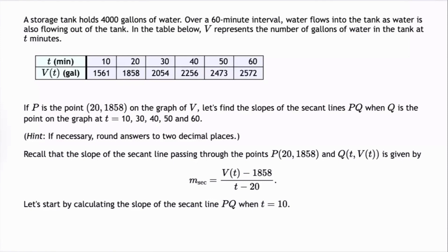Hello. Let's work through this problem together. A storage tank holds 4,000 gallons of water. Over a 60-minute interval, water flows into the tank as water is also flowing out of the tank. In the table below, V represents the number of gallons of water in the tank at T minutes.